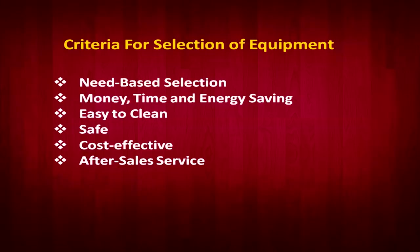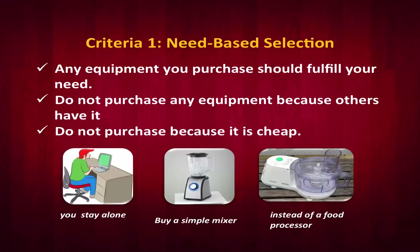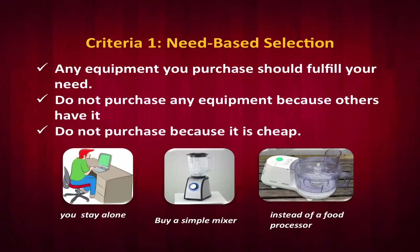We have some criteria for selecting equipment: need-based selection, saving time, money and energy, easy to clean, safety, cost effectiveness, and after-sale services. For need-based selection — if you are living alone in a hostel and purchase a 7,000-rupee food processor with juicer, grinder, mixer, grater, and atta-making, but you only need to make a milkshake, you end up wasting rather than saving. You need to be very clear about your need before selecting a product.